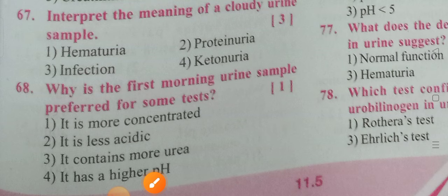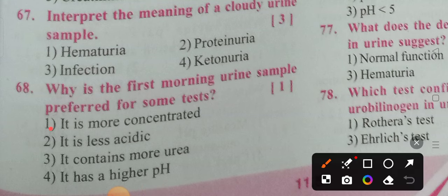Why is the first morning urine sample preferred for some tests? Options: It's more concentrated, it is less acidic, it contains more urea, it has a higher pH. Option 1 is the correct answer — it's more concentrated.